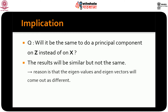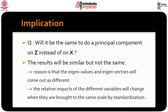Would it be the same as doing the principal component on the original variables? The answer is that they would be similar, but not exactly the same, because the eigenvalues and eigenvectors would come out slightly different. This is primarily because the original variables have different weightage — one variable may be large, another small. But once you standardize them, these advantages or disadvantages are neutralized and they have a different type of impact overall.